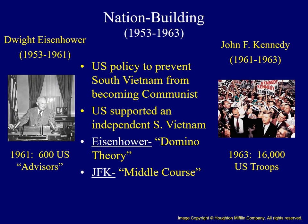Presidents Eisenhower and Kennedy were associated with the U.S. policy of nation-building — defined as the U.S. policy to prevent South Vietnam from falling to communism. Eisenhower explained U.S. interest with the domino theory: if one domino falls, the entire row falls. Kennedy supported a middle course, wanting enough troops to ensure South Vietnam's survival without full-scale war. At the end of Eisenhower's presidency there were 600 American advisors in Vietnam; by the time Kennedy left office, that commitment had grown to about 16,000 troops.